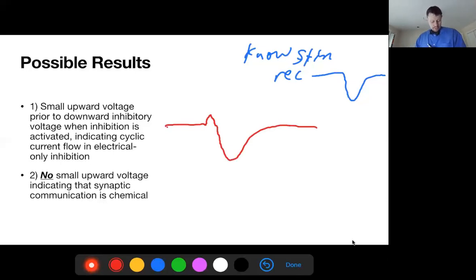The other thing which he did not expect was that when you stimulate the input, you might not see that little blip, you might only see the inhibition. He thought people hadn't looked closely enough to see the little blip, which would be indicative of this cyclic current flow, and then that would indicate how an electrical only set of connections could lead to inhibition.